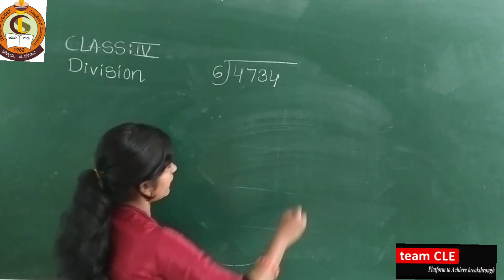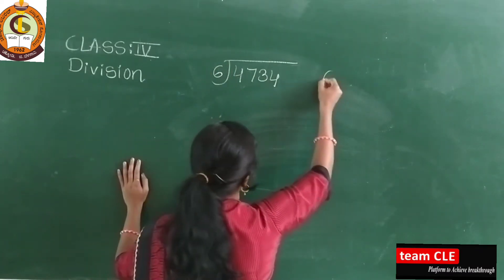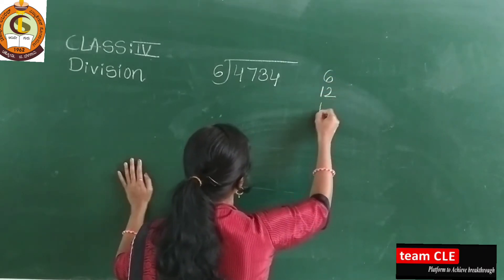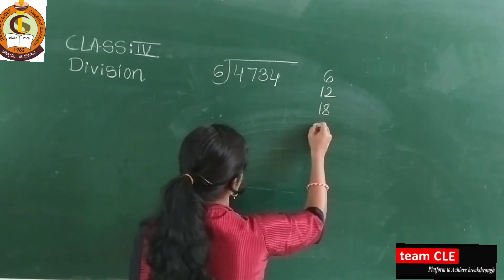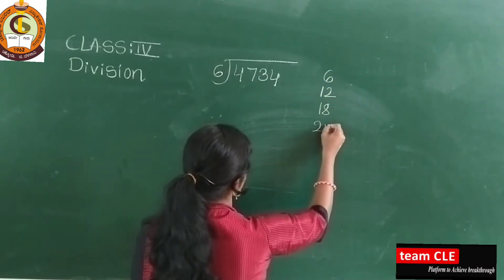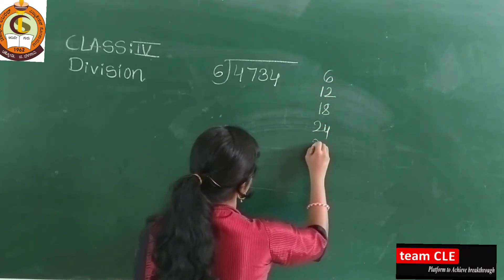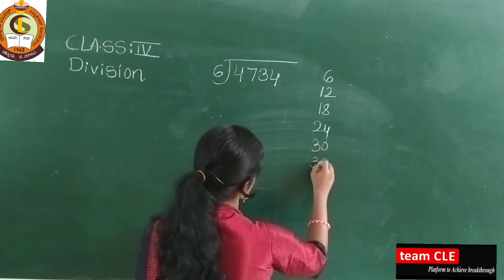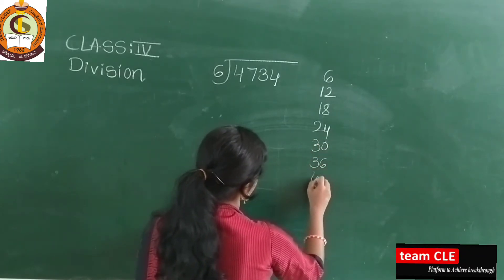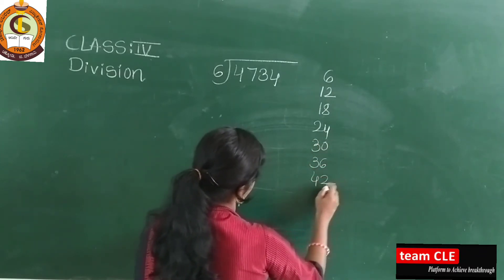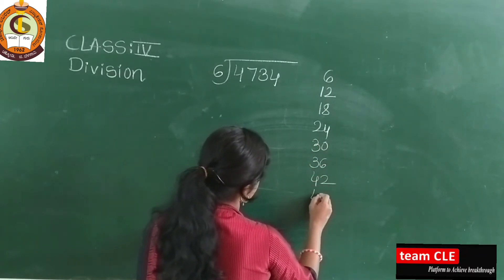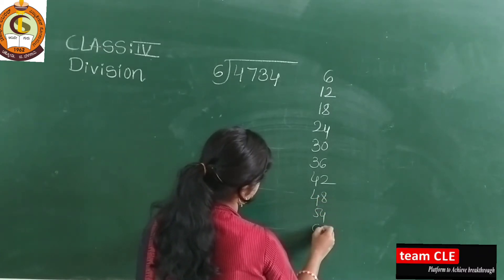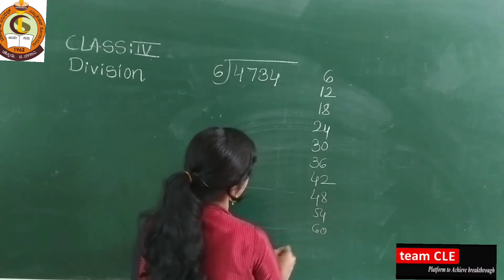Write the 6 times table: 6×1=6, 6×2=12, 6×3=18, 6×4=24, 6×5=30, 6×6=36, 6×7=42, 6×8=48, 6×9=54, 6×10=60.